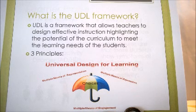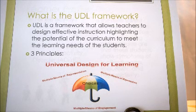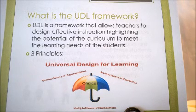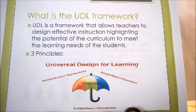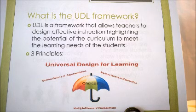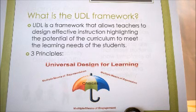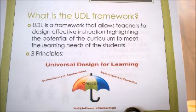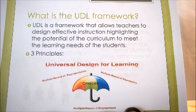Founded in educational research, UDL is an approach that has three general principles based on three neural networks: recognition, strategic, and affective networks. Principle 1 is to support recognition learning by providing multiple flexible methods of presentation — multiple means of representation. Principle 2 is about supporting strategic learning by providing multiple and flexible methods of expression and apprenticeship — multiple means for action and expression. Principle 3 is about supporting affective learning by providing multiple and flexible options for engagement — multiple means of engagement.